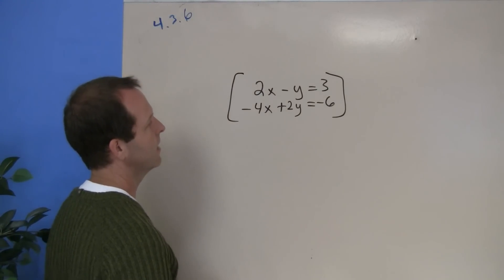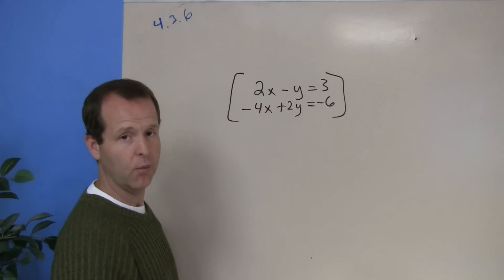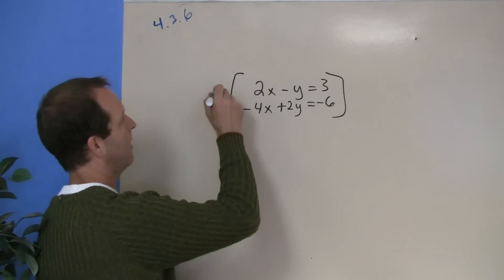So let's go through, and since I can't add them right now in a way that a variable would drop out, let's multiply the top one by a two.